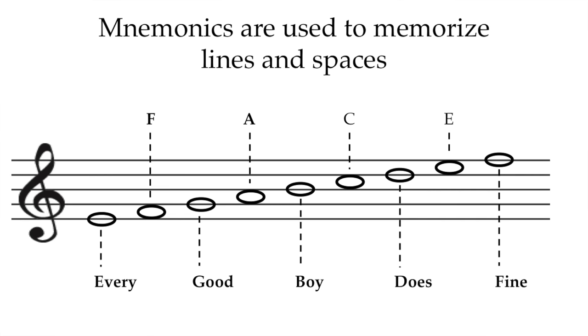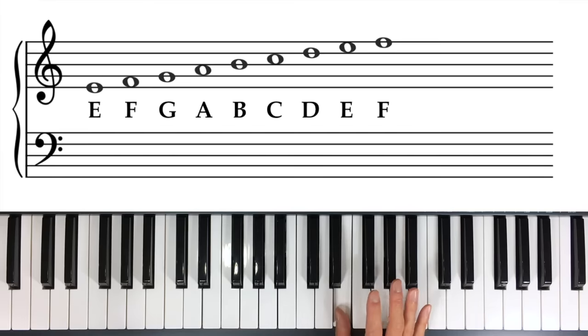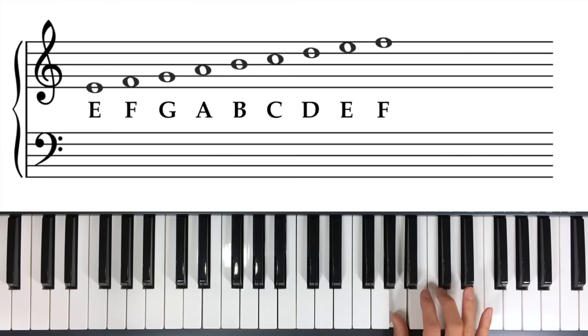One thing you can get from looking at this picture is noticing a pattern. Notice as you go from line to space to line to space, you're moving up the alphabet. You're moving consecutive letters. So the first line there is E, right, every, and then you go to the space, which is F, you know, the F in face. Then the next line is G, then the space is A.